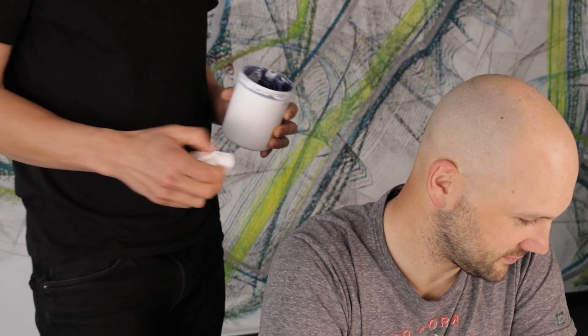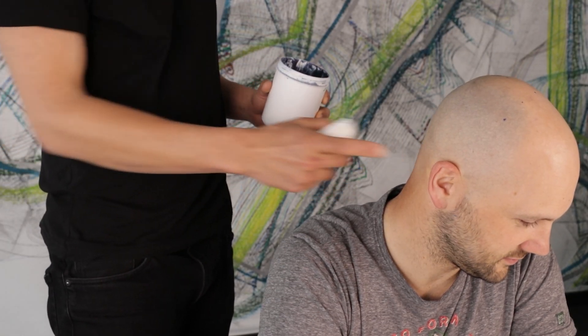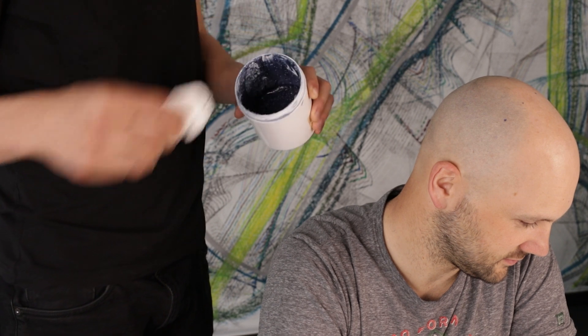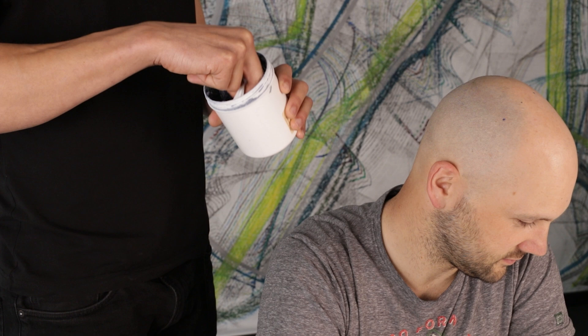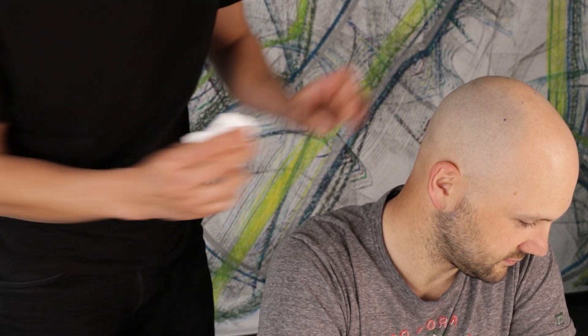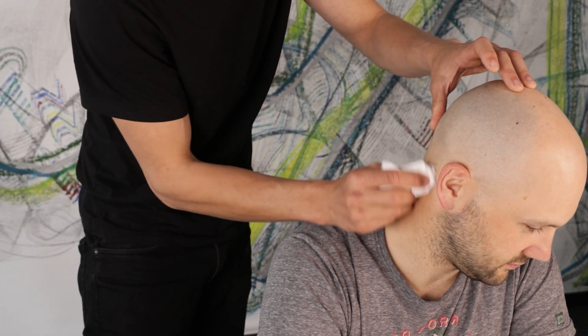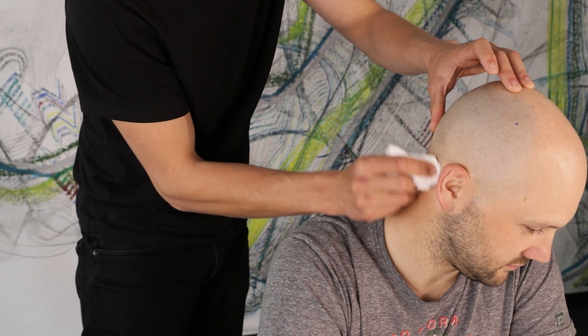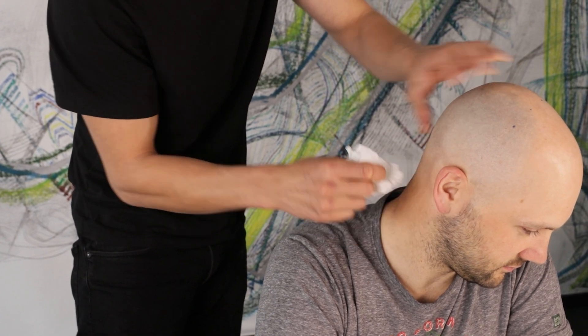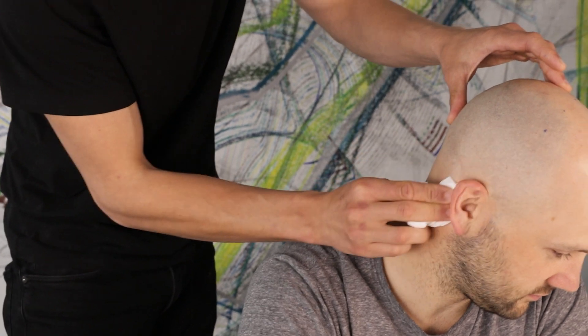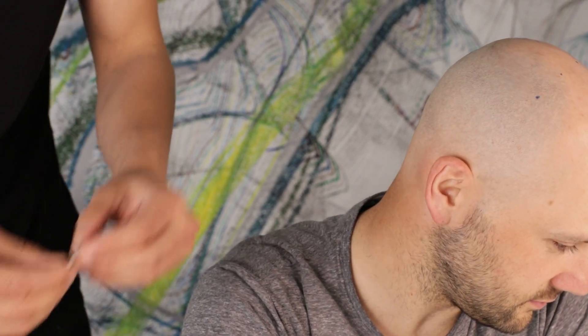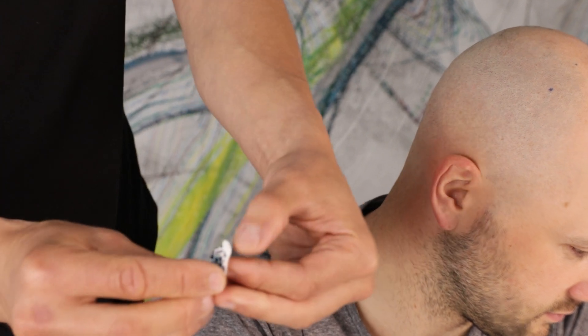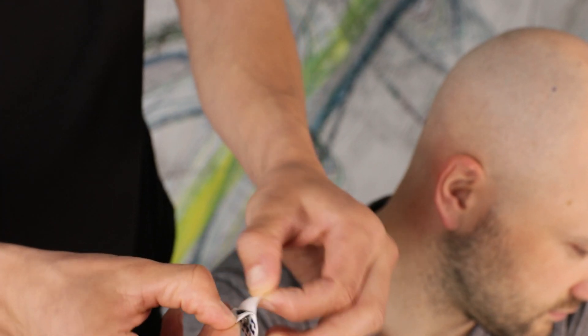As ground position we use the mastoid. For preparing the skin we can use abrasive gel and rub a bit on the skin to have better impedance. Just use a bit of abrasive and rub it on the skin. Afterwards you can use this sticking electrode clips and place it on the mastoid.